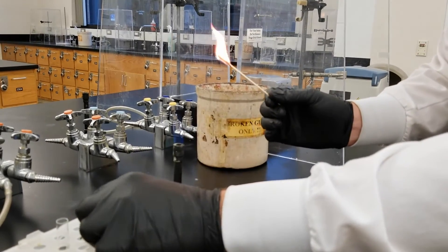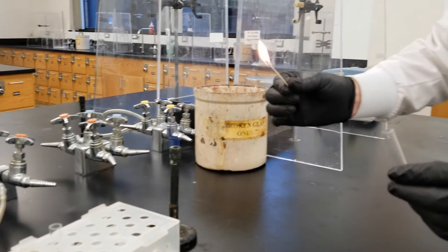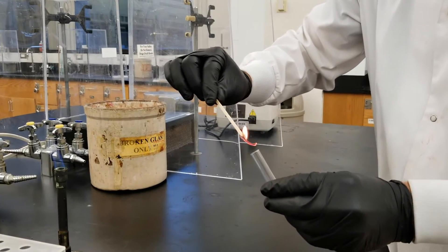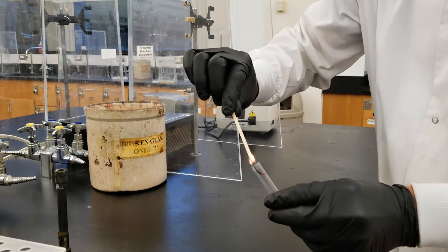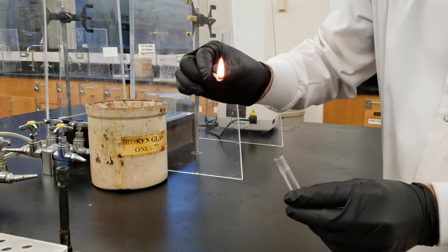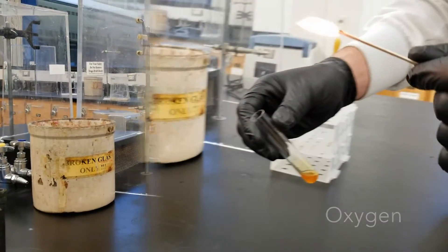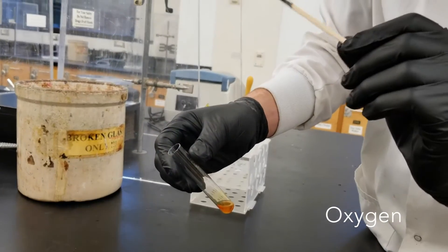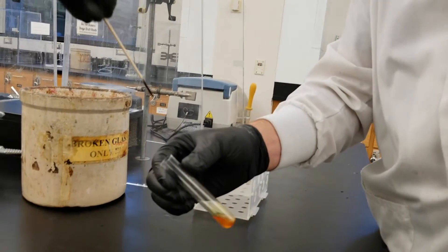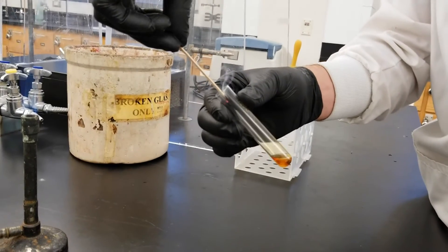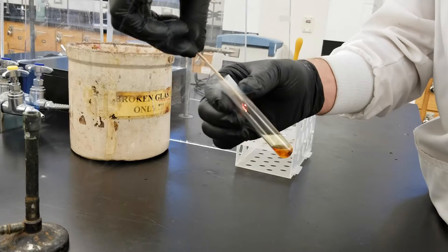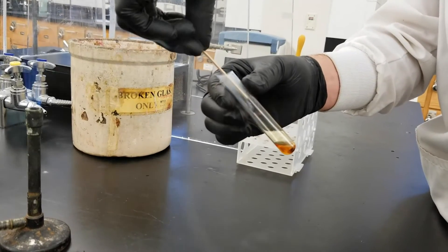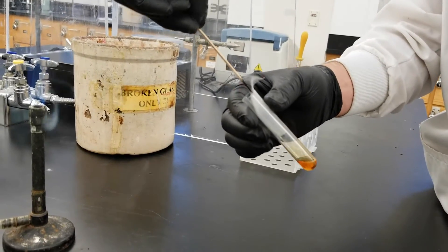In each case you'll tilt your test tube containing the unidentified gas and insert the glowing or burning end of your splint into the test tube. The table in your lab manual will help you identify the chemical based on what you observe. A glowing splint will reignite when exposed to oxygen gas because oxygen supports combustion. Occasionally you will hear a small pop as the splint reignites but this is distinct from the burning splint test for hydrogen.